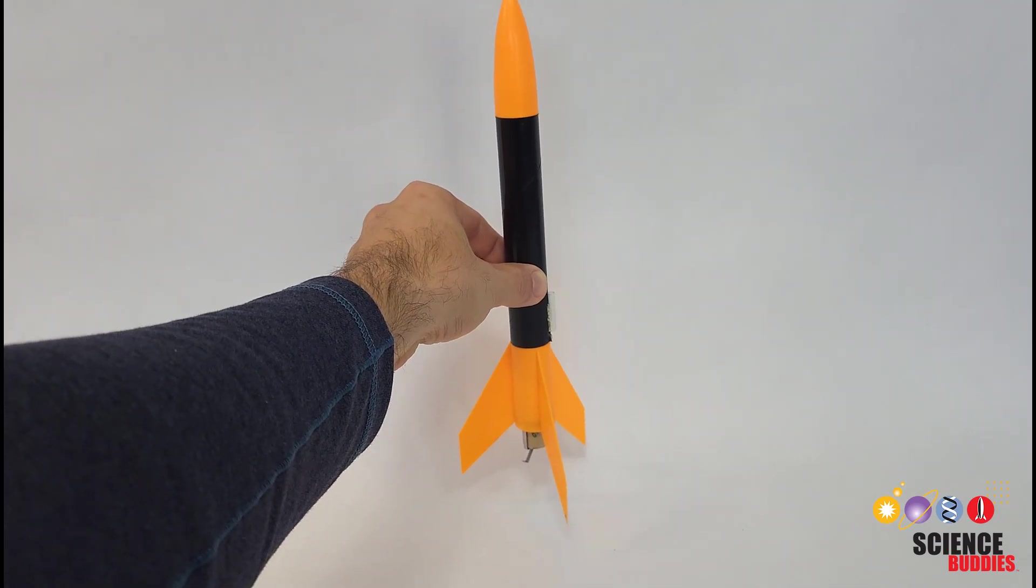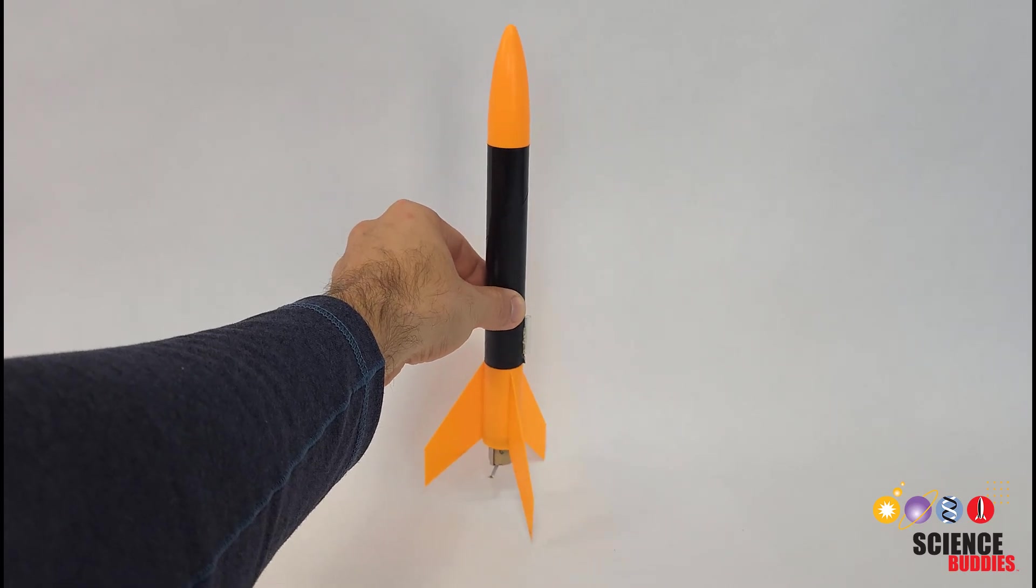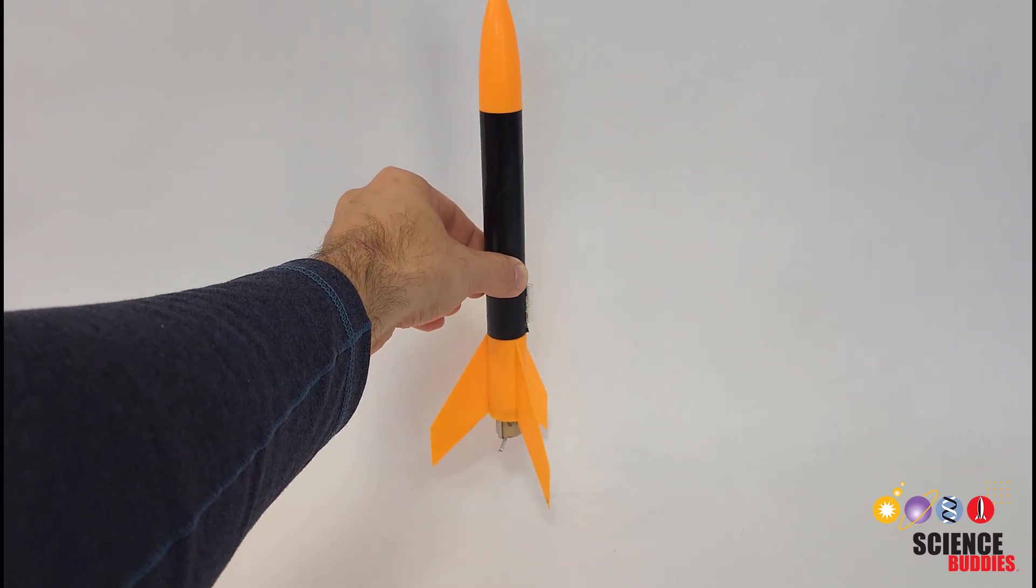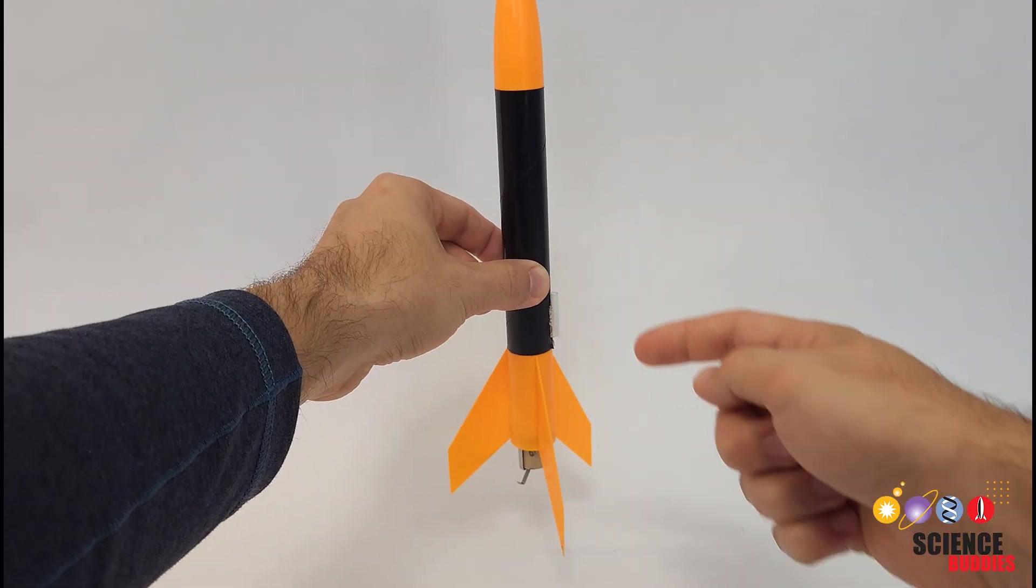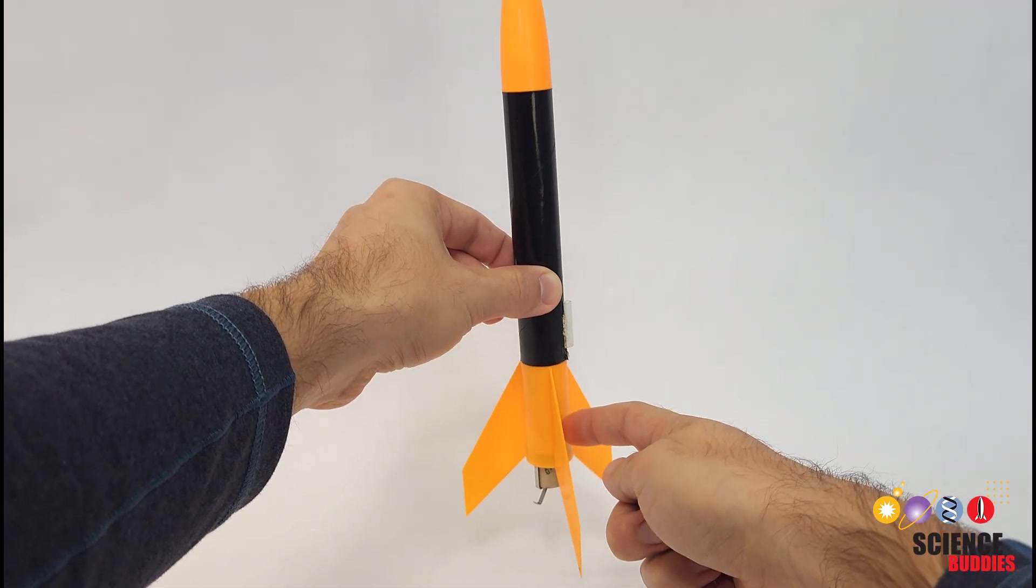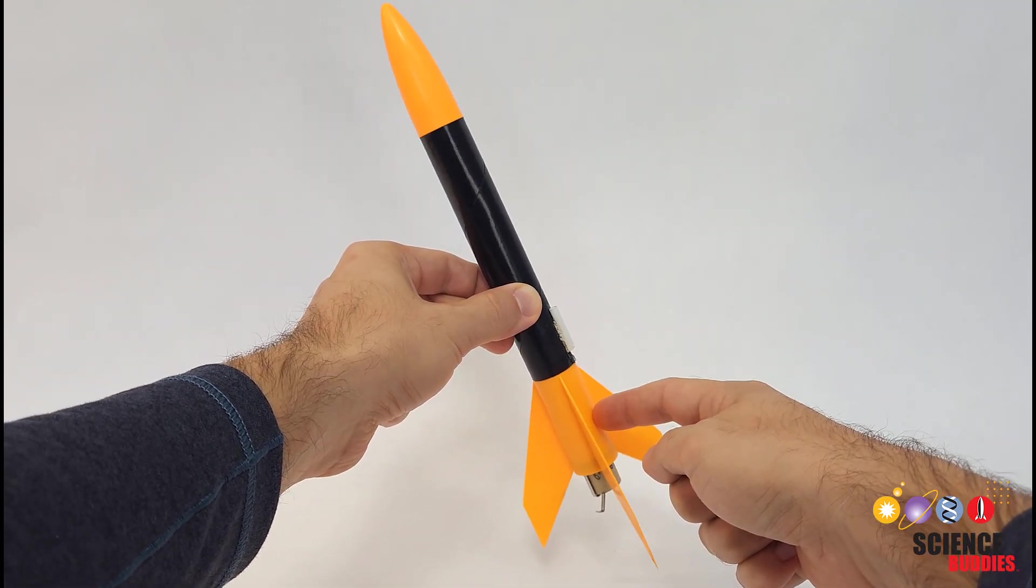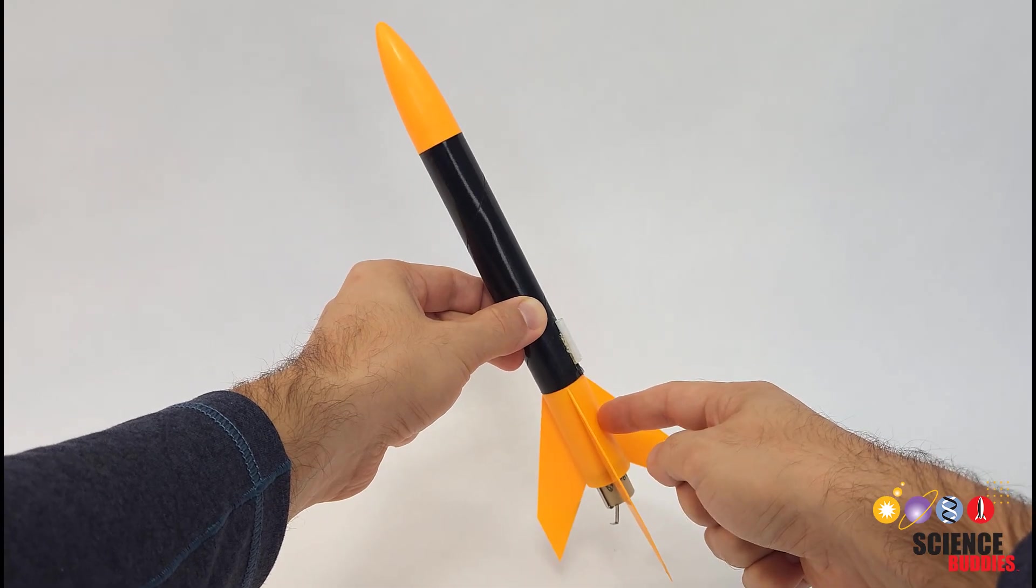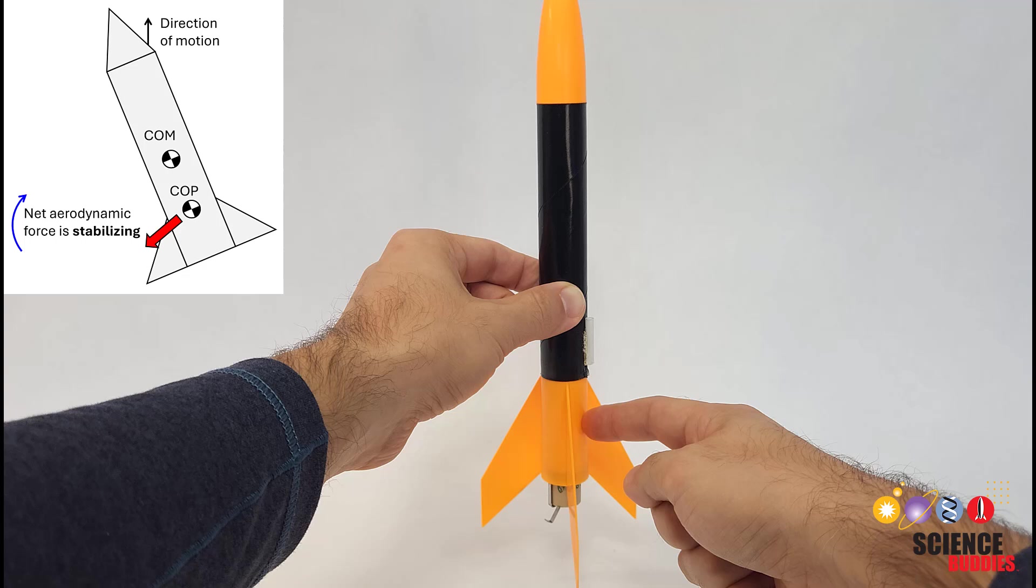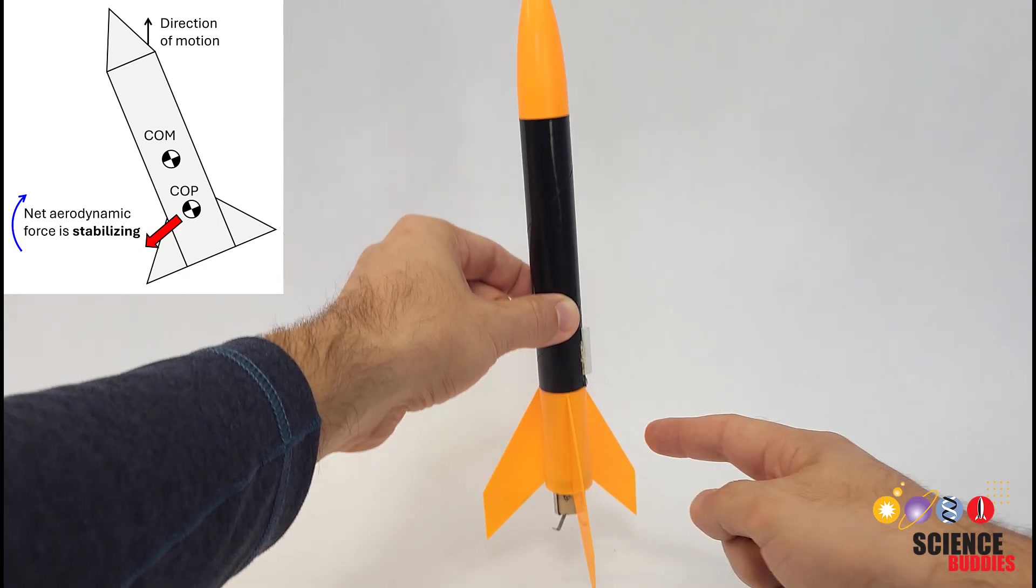Ideally, your rocket would just fly straight up, but in reality, it's going to wobble a little bit and rotate about its center of mass, represented by me pinching the rocket with my left hand here. If the center of pressure is behind the center of mass, then if the rocket tilts off course, the aerodynamic forces acting on the rocket, represented by me pushing on the rocket with my right finger here, are going to cause the rocket to rotate back in the vertical direction so it gets back on course and continues to fly straight.